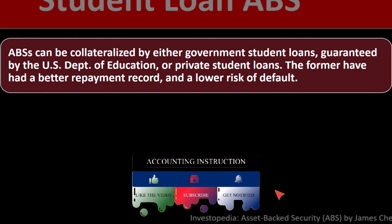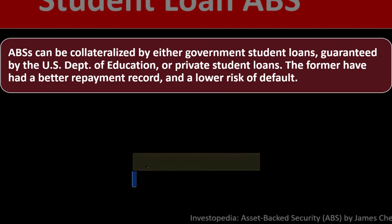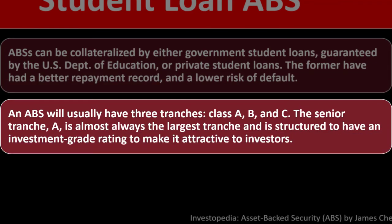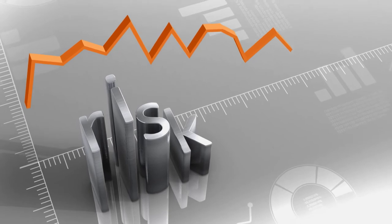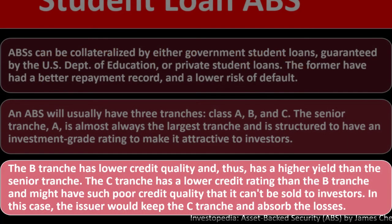Student loan ABS can be collateralized by either government student loans guaranteed by the U.S. Department of Education, or private student loans. The former have had a better payment record and a lower risk of default. Like other ABS, student loan ABS typically has three tranches — A, B, and C. Tranche A carries an investment-grade rating; Tranche B has lower credit quality and a higher yield; and Tranche C may have such poor credit quality that it cannot be sold to investors.